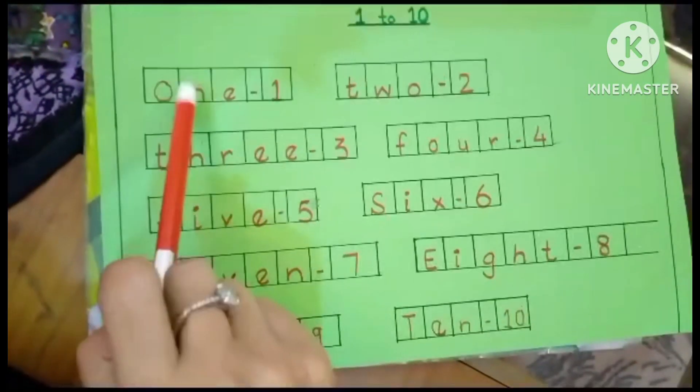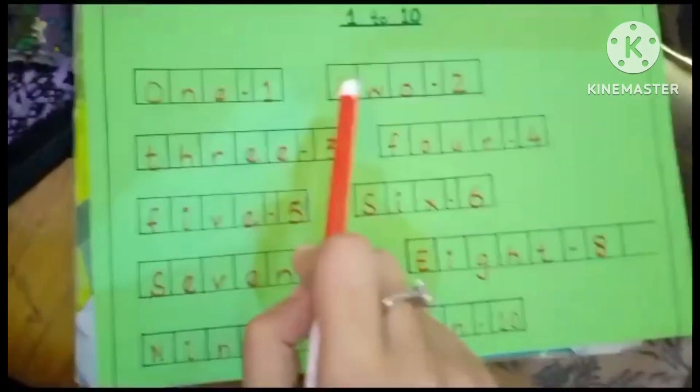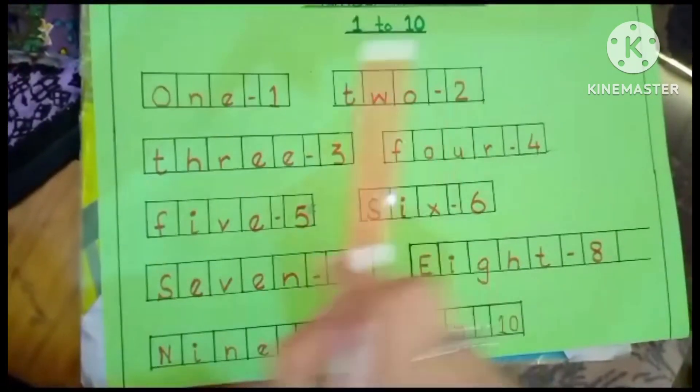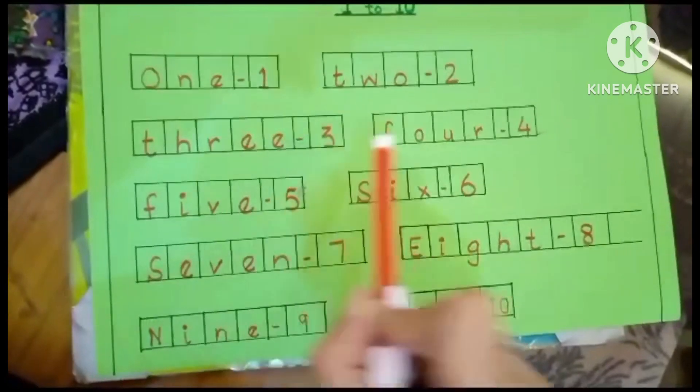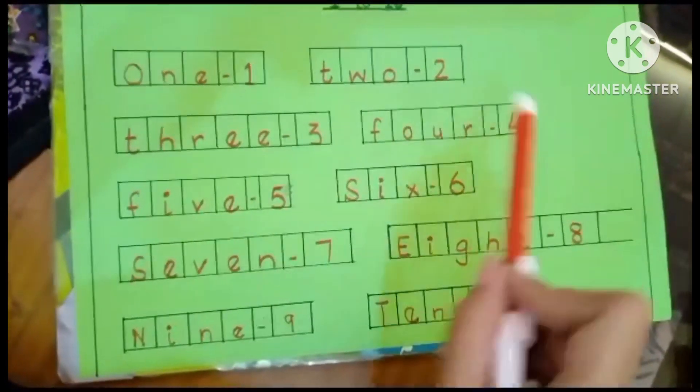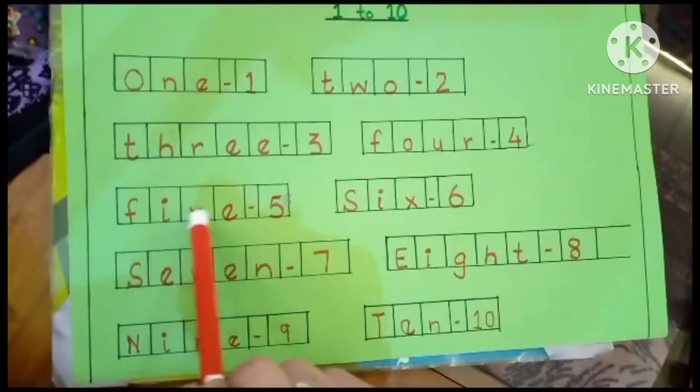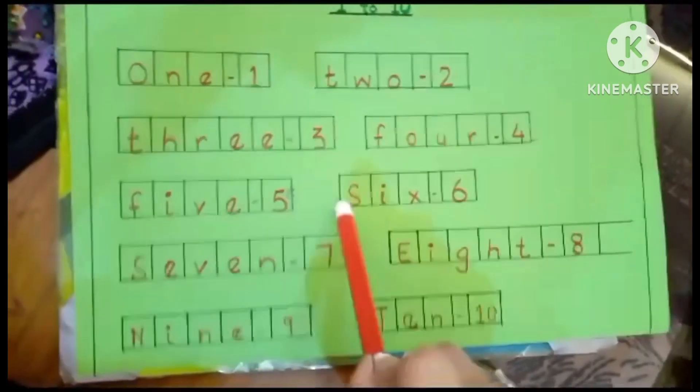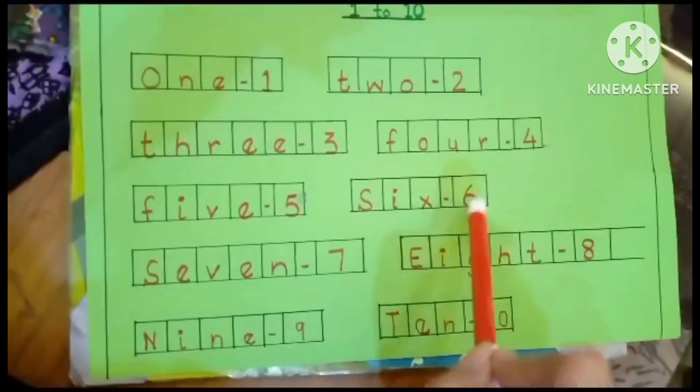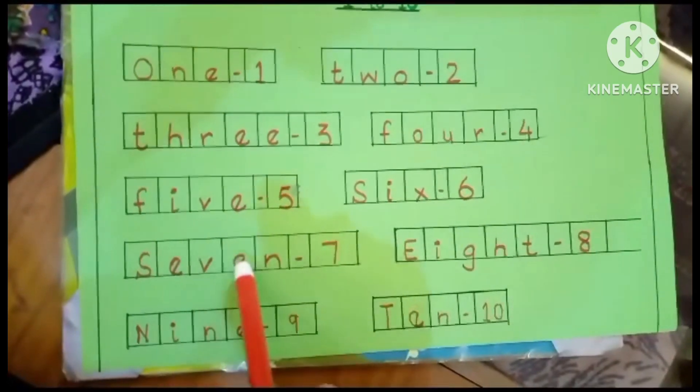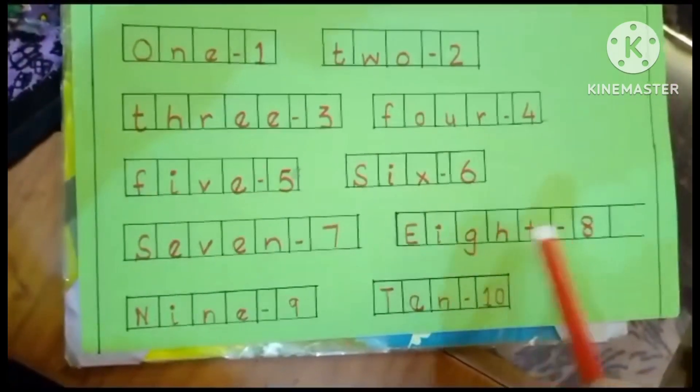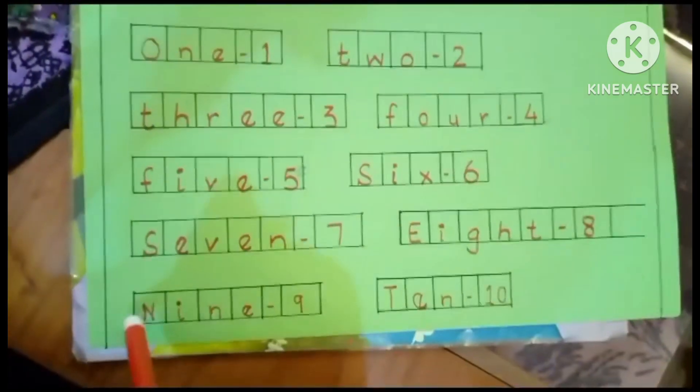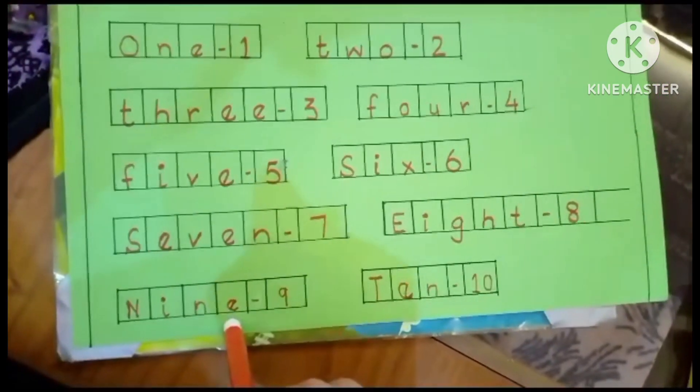O-N-E, one. T-W-O, two. T-H-R-E-E, three. F-O-U-R, four. F-I-V-E, five. S-I-X, six. S-E-V-E-N, seven. E-I-G-H-T, eight. N-I-N-E, nine.